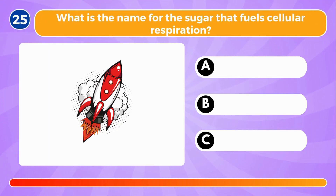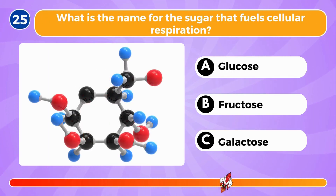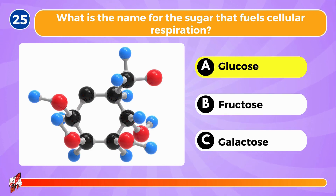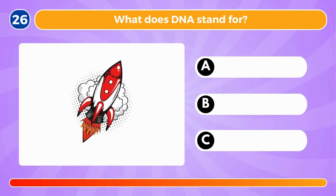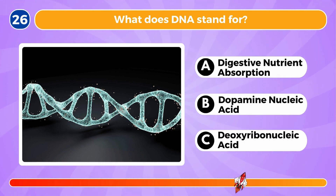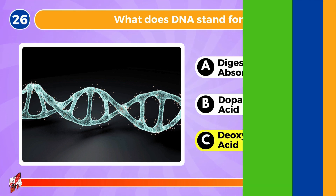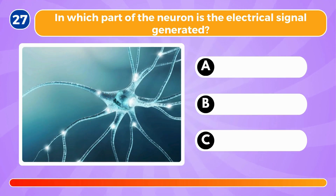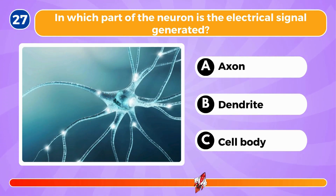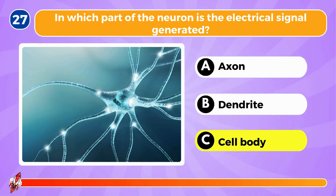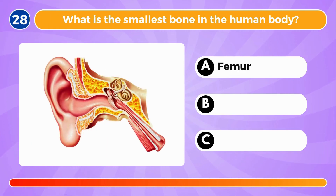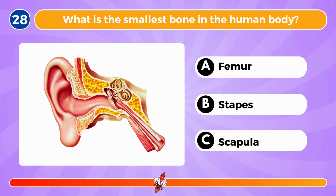What is the name for the sugar that fuels cellular respiration? It's glucose. What does DNA stand for? It stands for deoxyribonucleic acid. In which part of the neuron is the electrical signal generated? It's the cell body.